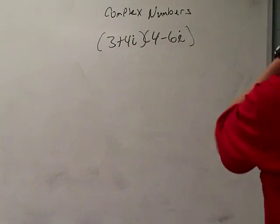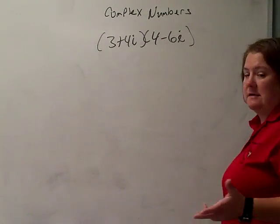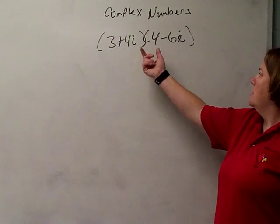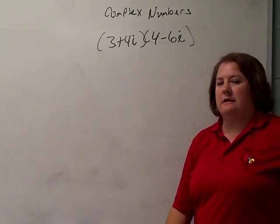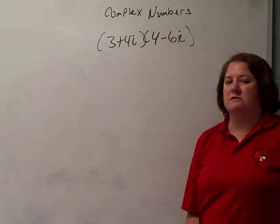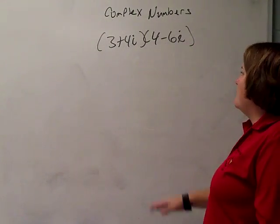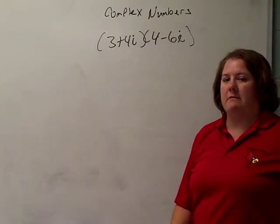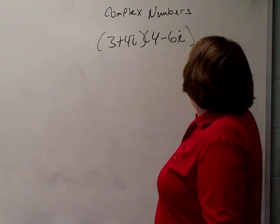Alright, I hope you figured out what operation you were doing here. You need to know what it means whenever two parentheses are right next to each other. This is a binomial times a binomial, so you're multiplying. When I multiply binomial times a binomial, the method I use is FOIL.